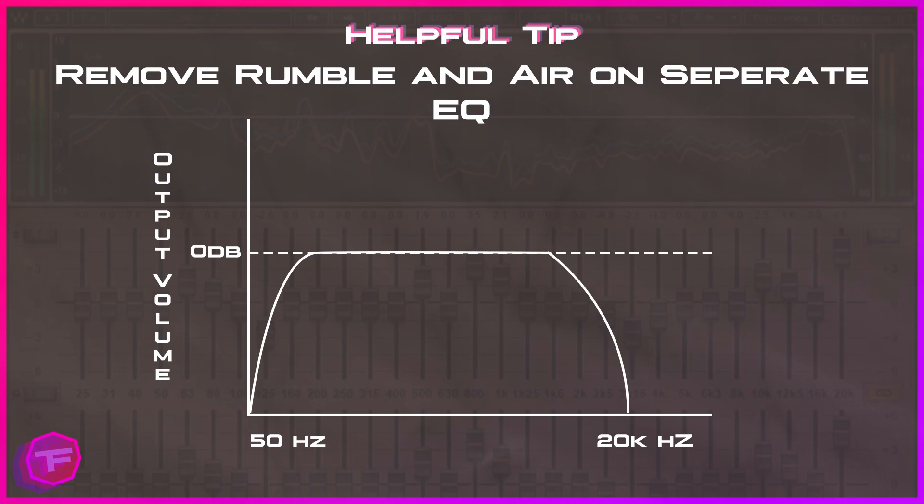Here's an extremely helpful tip: in our Equalizer APO preset file we remove the rumble and the air — that low pass and high pass — in a separate EQ from the rest of the adjustments. So we have one EQ that cuts the low rumbles and high air sounds, and then a separate EQ below that with all the other adjustments. Consider using two EQs if your setup allows it.